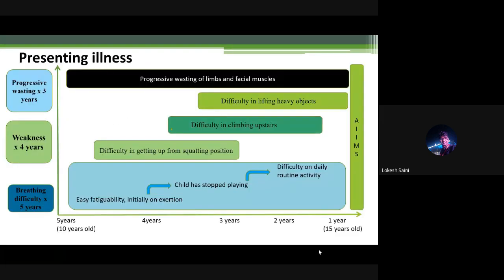The child presented to our OPD with breathing difficulty for five years, proximal predominant weakness for four years, and progressive wasting of all extremities over three years. The child was well until 10 years of age — absolutely asymptomatic — and from the last five years symptoms started with easy fatigability, initially on exertion, causing the child to stop outdoor activities, and then progressing to difficulty with fast activities like walking and climbing stairs.